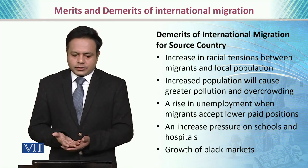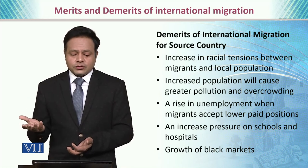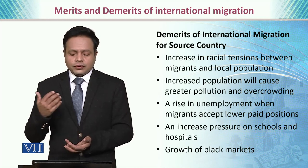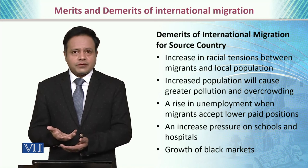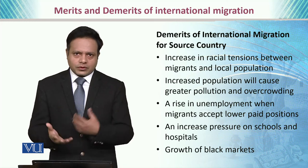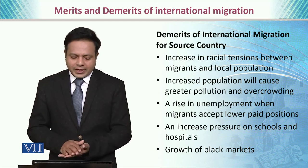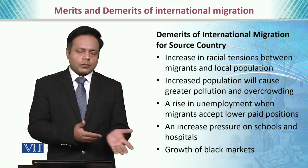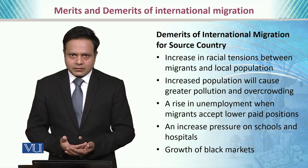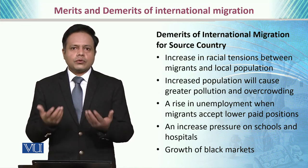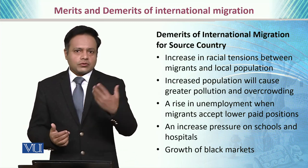If we talk about the demerits for the host country, it increases racial tensions between migrants and the local population. The increased population causes greater pollution and overcrowding. There is a rise in unemployment pressure when migrants accept low-paid positions, making more workers available and potentially lowering wages. There is increased pressure on schools and hospitals as more population arrives from abroad, which is a burden on resources. The growth of black markets also occurs, where immigrants agree to work for wages far lower than government-set standards, which increases the crime rate as well.